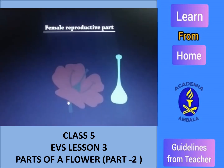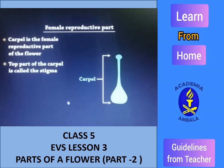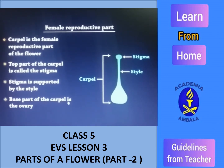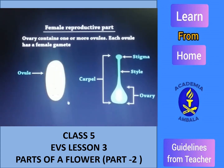The carpel is the female reproductive part of the flower. This whole flask-like structure is called carpel. The top part of the carpel is called stigma, on which pollen grains stick. Stigma is supported by the tube-like structure called style. The base part of the carpel is the ovary. Ovary contains one or more ovules, as you can see in the diagram.